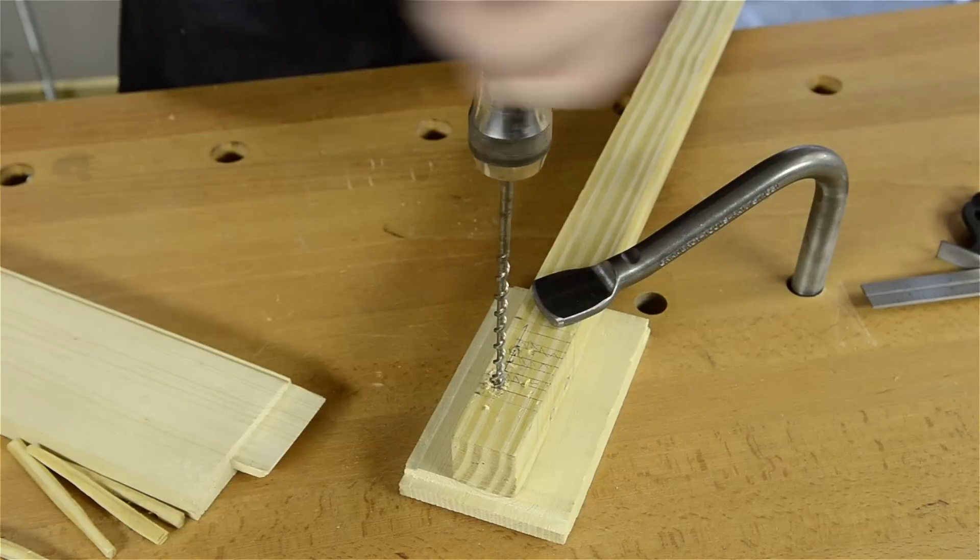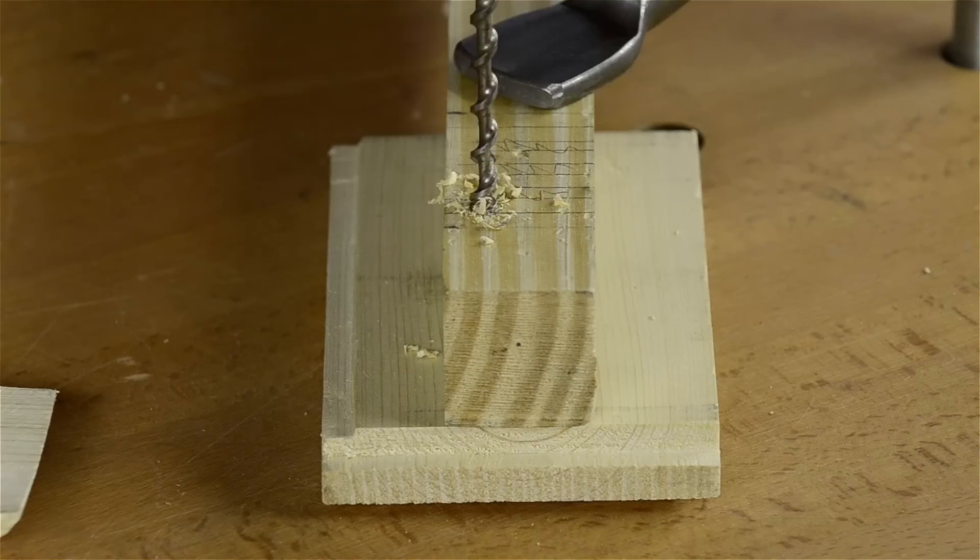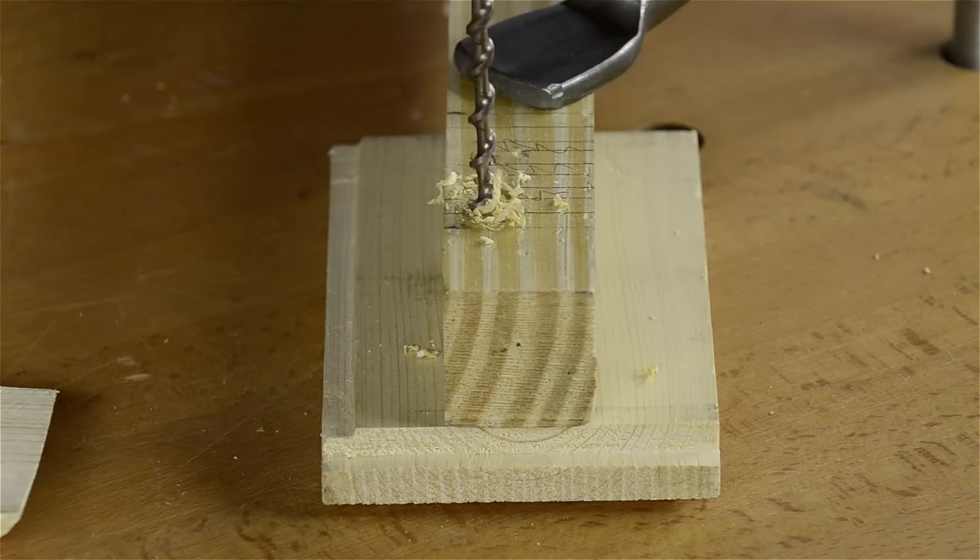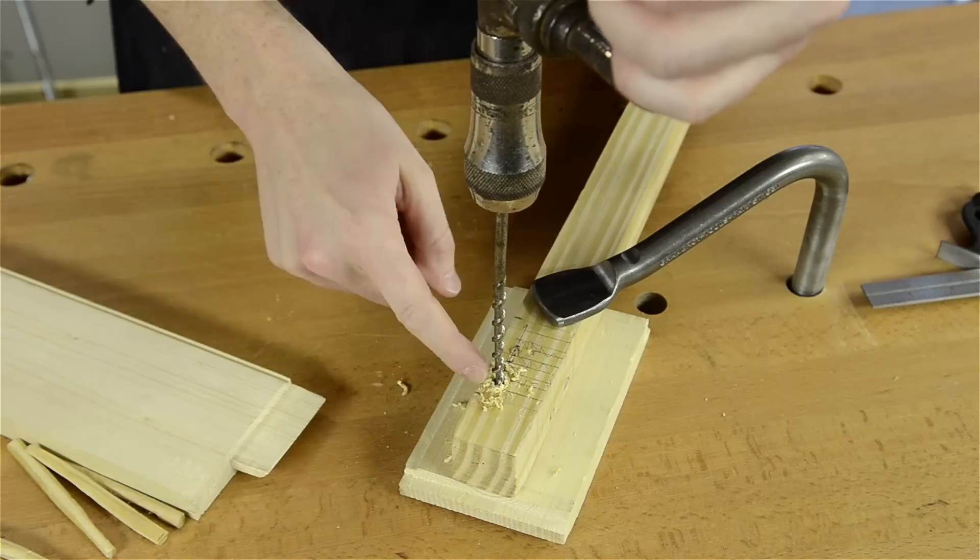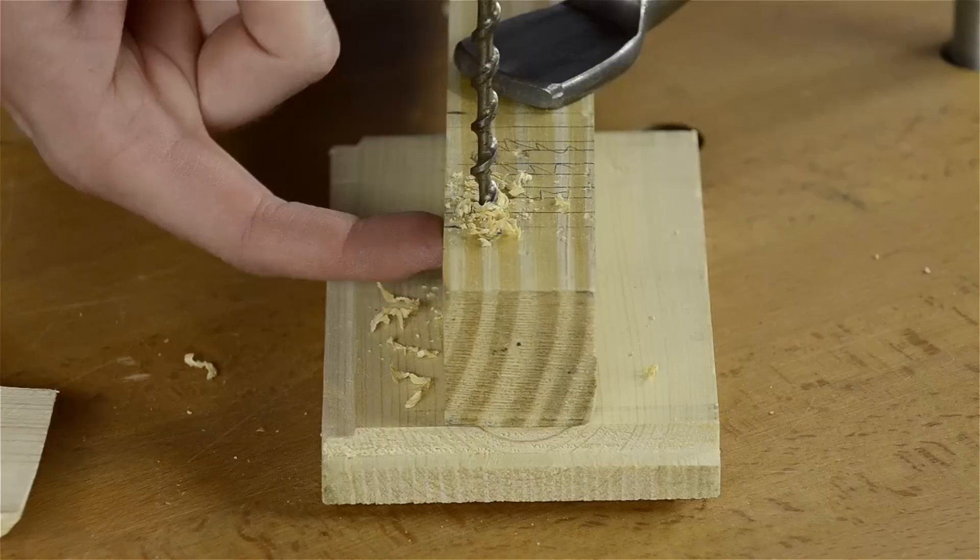The reason I have a piece of wood down below is so that we don't have an exit wound when it comes through. You can see that it punched through the middle, the mortise in there, and it doesn't matter if it's messy because you won't be able to see that.